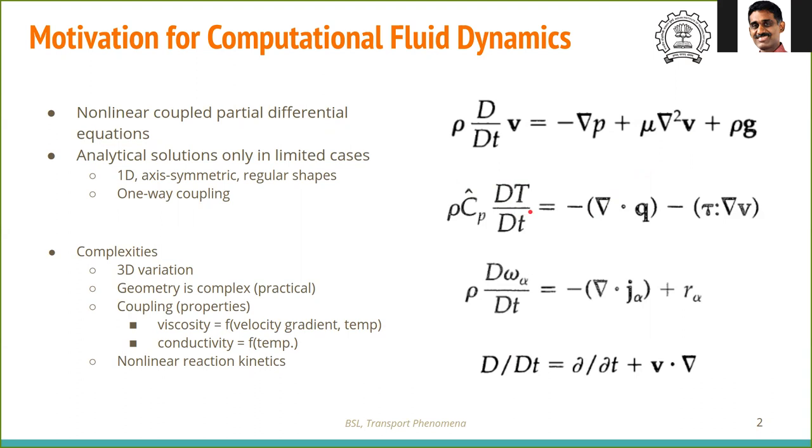Similarly, in most cases, q is k times ∇T. Now, if k, the thermal conductivity, does not depend on temperature and does not change with space, you can pull k out of this equation and it becomes linear. However, if k is a function of temperature, you'll have a temperature term times ∇T, which makes it non-linear.